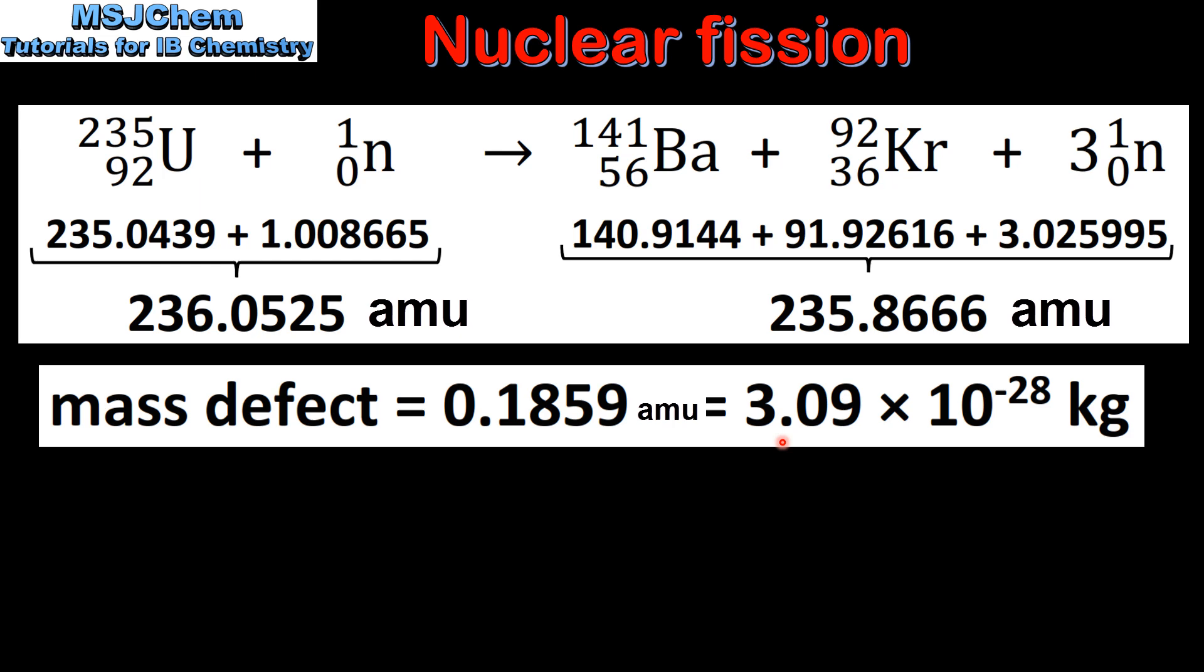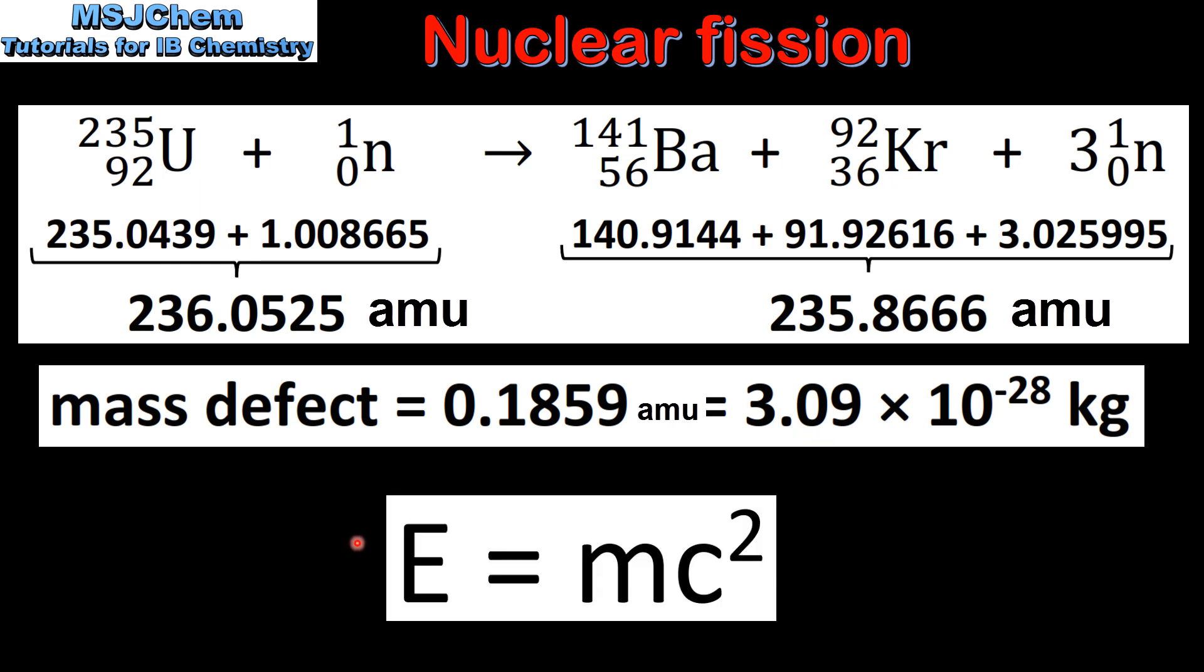Which we can then convert to kilograms. Next we will use the equation E equals MC squared to calculate the energy released in the fission reaction.